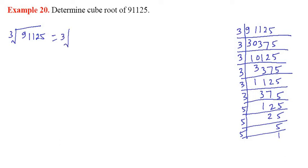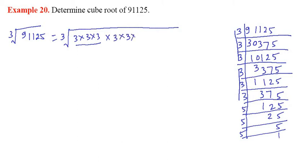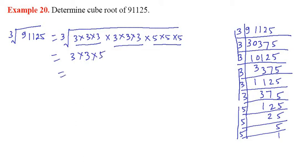So the cube root of 91125. First of all, this 3 — you can write 3 × 3 × 3. Once again, these 3s form a triplet: 3 × 3 × 3. Now once again, 5 — so you write 5 × 5 × 5. So all are having triplets: 3 is the first triplet, 3 is the second triplet, and the third triplet is 5. So you have to write here: it is 45. So that will be your answer.